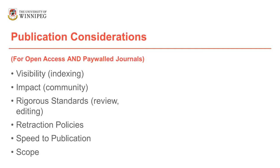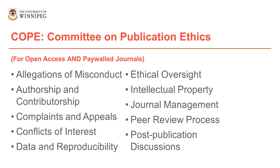Scope is also worth considering. Sometimes open access publishers are criticized for having too broad a scope, but we see this with paywall journals as well, and sometimes that broad scope means you've got a big community. I'm always happy to help find particular journals and publishers in your area that are reputable. The other great resource is COPE — the Committee on Publication Ethics — which is a standard for journals to hold themselves to, covering things like allegations of misconduct, authorship and contributorship, complaints and appeals, conflicts of interest, data and reproducibility, ethical oversight, intellectual property, journal management, peer review, and post-publication discussions.